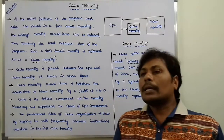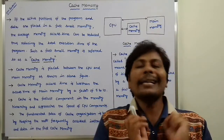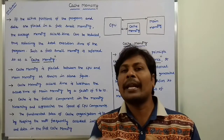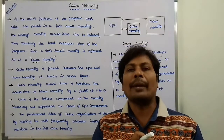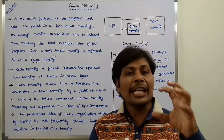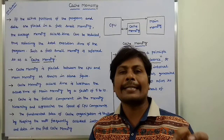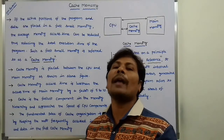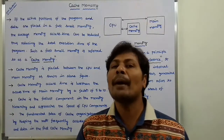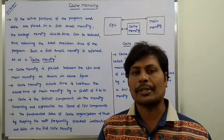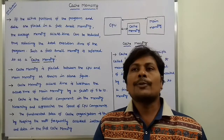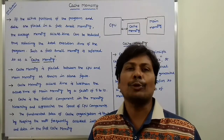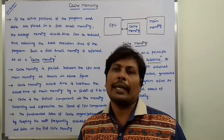Comparing the access time of cache memory and main memory: the cache memory access time is always less than the main memory access time, by a factor of 5 to 10 times.